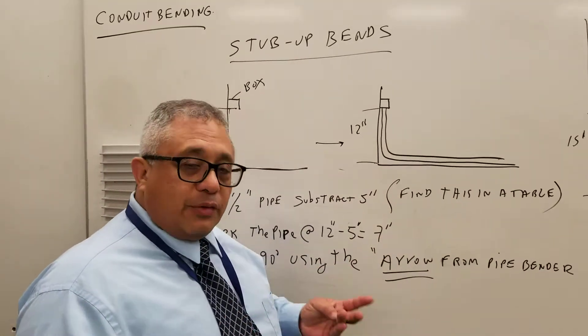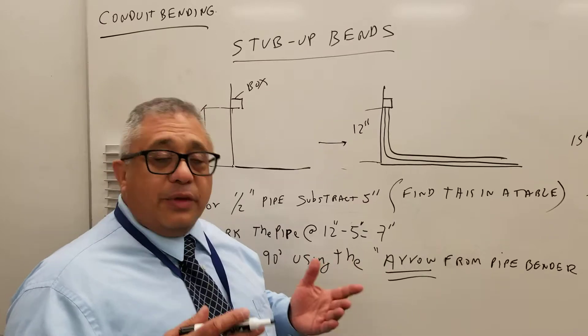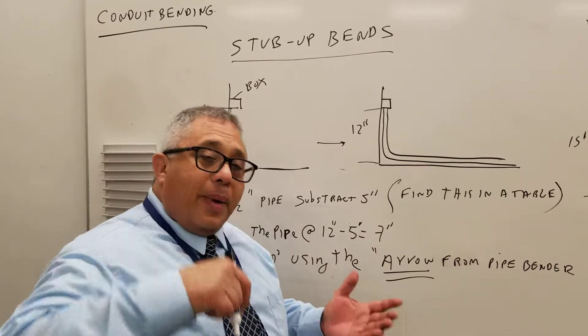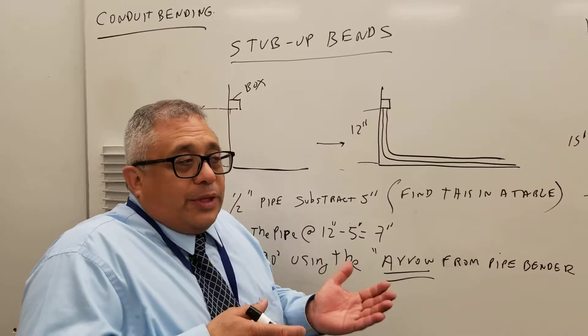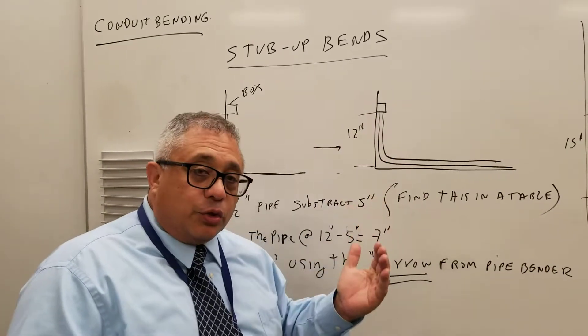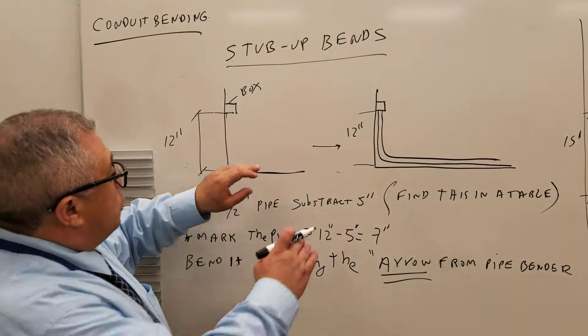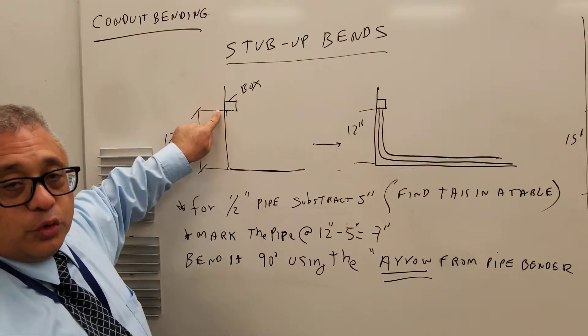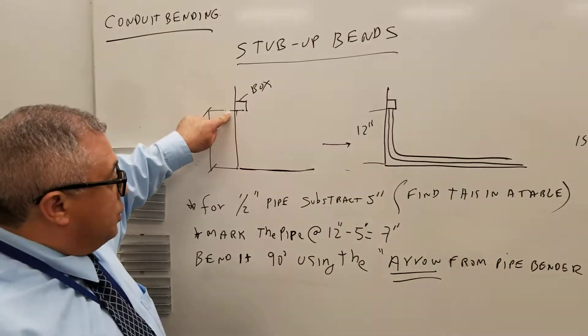Why do we need to subtract 5 inches? We subtract 5 inches because as we bend the conduit, it grows 5 inches. And those are the 5 inches you need to subtract so that when you place the conduit here, it will reach to the original 12 inches.